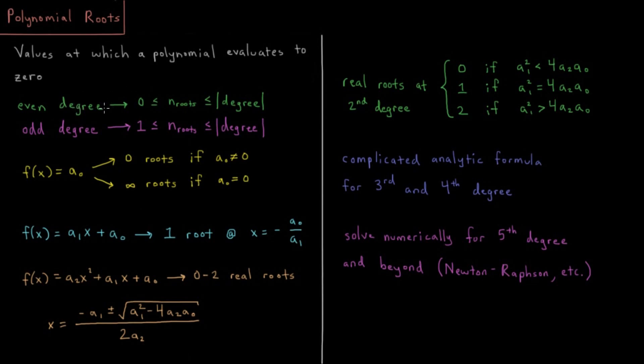So if you have an even degree, you're going to have somewhere between 0 and the degree for the number of roots. And for an odd degree, you have at least 1, and then you can go up to the degree as well.